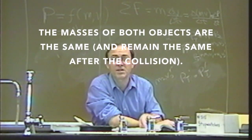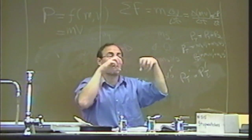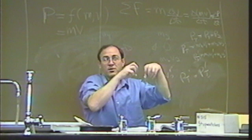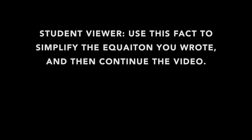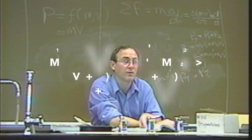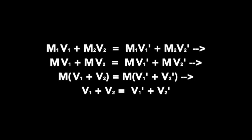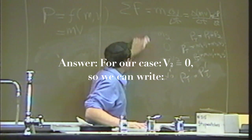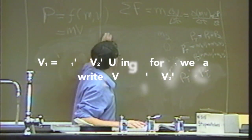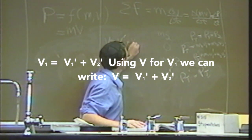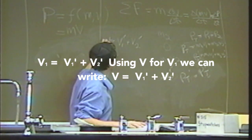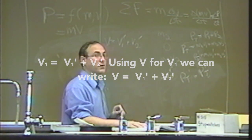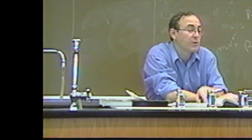In billiards the masses are the same - we can't always assume equal masses, but in this particular case both billiard balls are equal mass. So what can we do with the momentum equation? We cancel m from both sides, and we just get v = v1 prime + v2 prime. But we have two unknowns, so we need another equation - we use the energy equation.